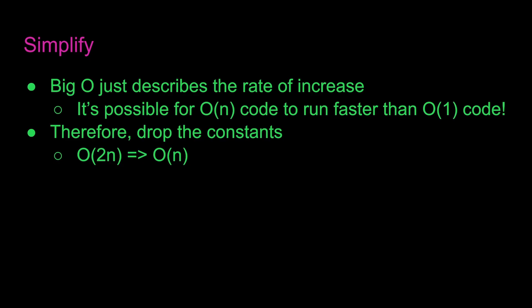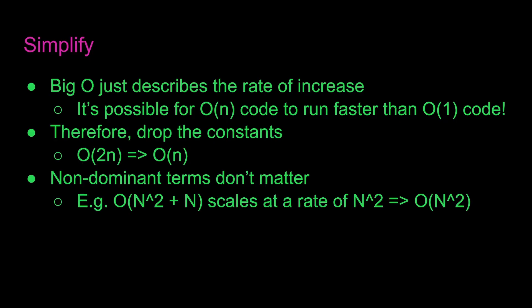So we can go from O(2n) to O(n). Also, non-dominant terms don't matter. If you have an algorithm that's O(n² + n), this actually just scales at a rate of n squared. So you can say O(n²).